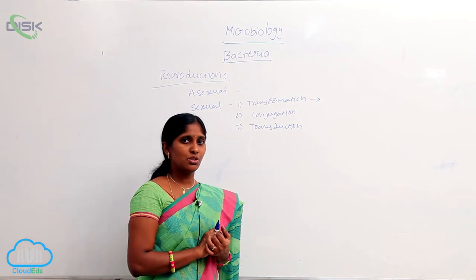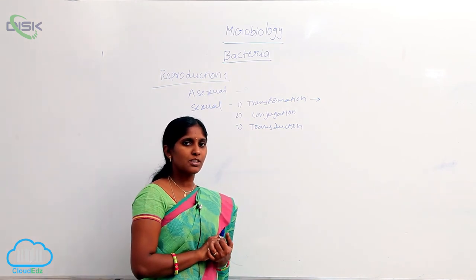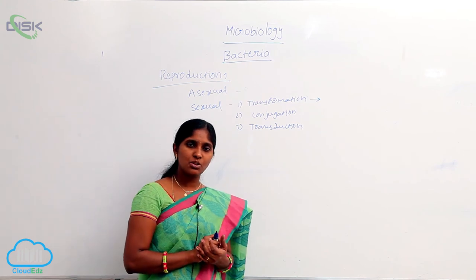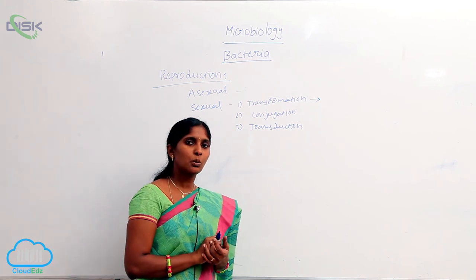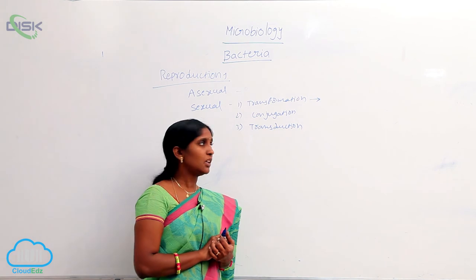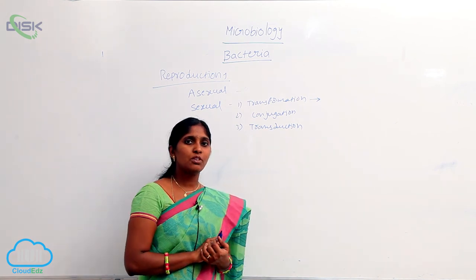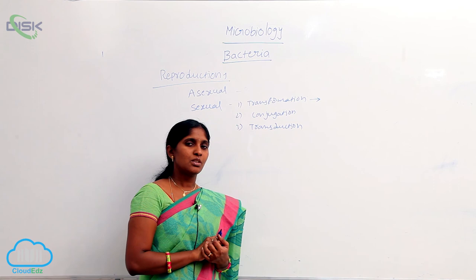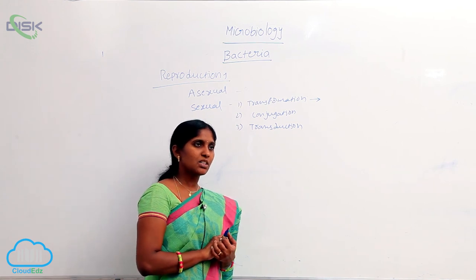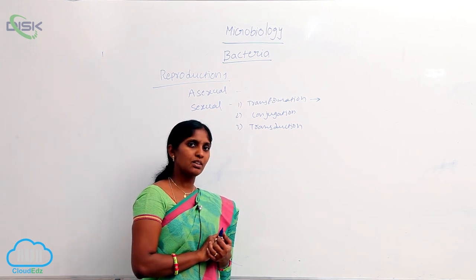Coming to conjugation — Leidenberg and Tartum discovered conjugation in E. coli in the year 1946. Here, the genetic material is exchanged between two bacteria. The bacteria which consists of a plasmid...